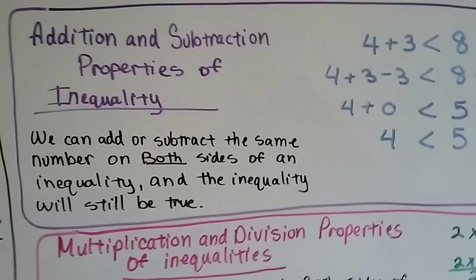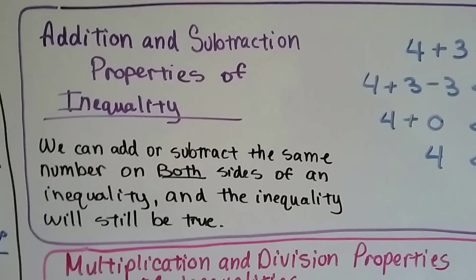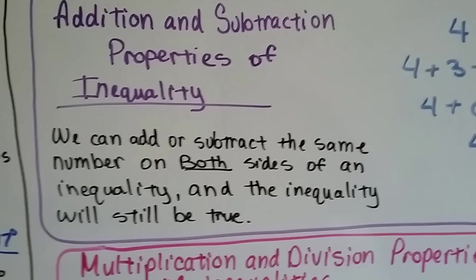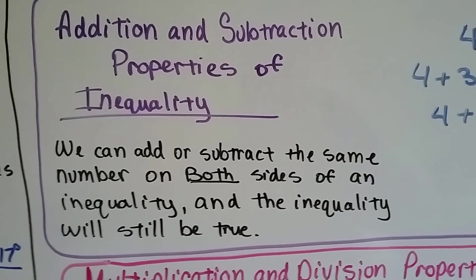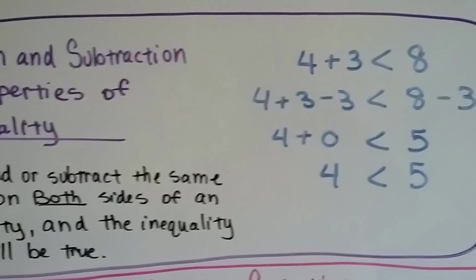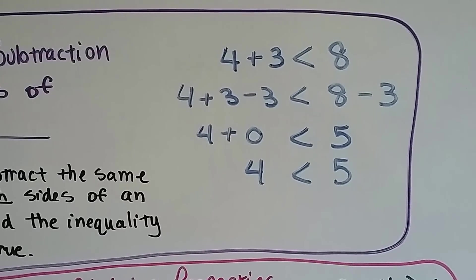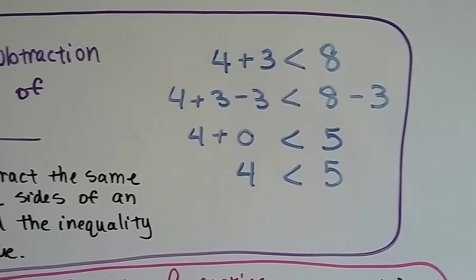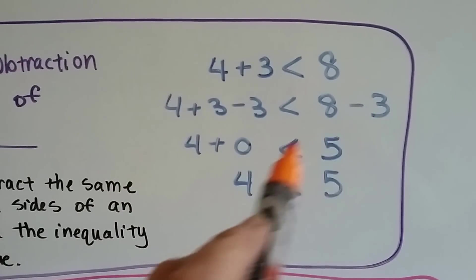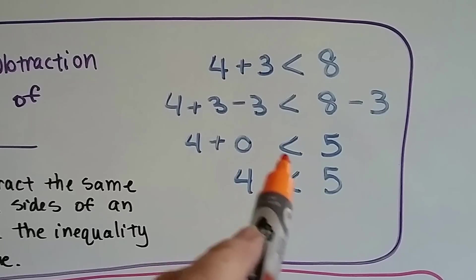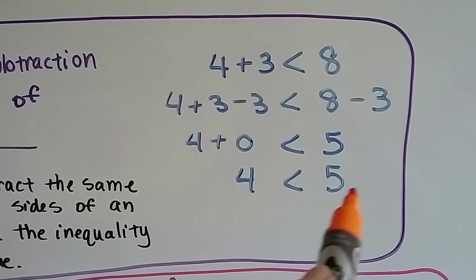The addition and subtraction properties of inequality say that we can add or subtract the same number on both sides of an inequality, and the inequality will still be true. So for example, 4 plus 3 is less than 8, and 4 plus 3 minus 3 is less than 8 minus 3. 4 plus 0 is less than 5, and 4 is less than 5.